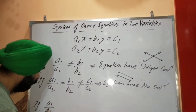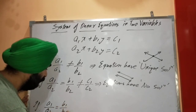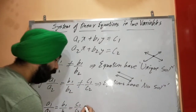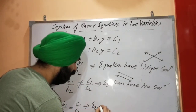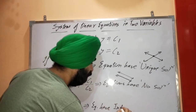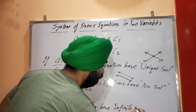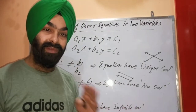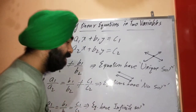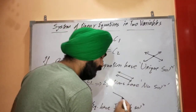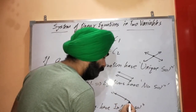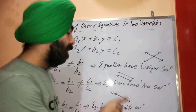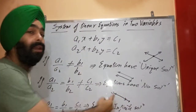The third case: if a1/a2 is equal to b1/b2 and is equal to c1/c2 — that is, all three ratios are equal — then the equations have infinite solutions. Infinite means limitless; the solutions never end. In this case the lines will be coincident lines — one line lying on top of the other — so there are infinitely many points of intersection.